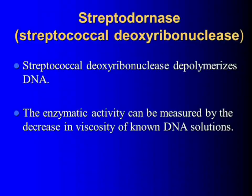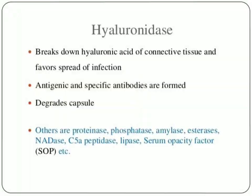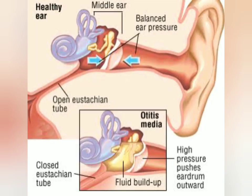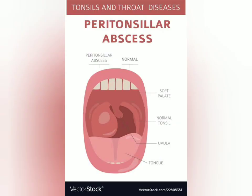Hyaluronidase causes breakdown of hyaluronic acid — the universal intercellular substance — and helps in the spread of infection. Regarding pathogenicity, sore throat is the most common streptococcal disease. Other conditions include Ludwig's angina, otitis media, quinsy, and cellulitis.